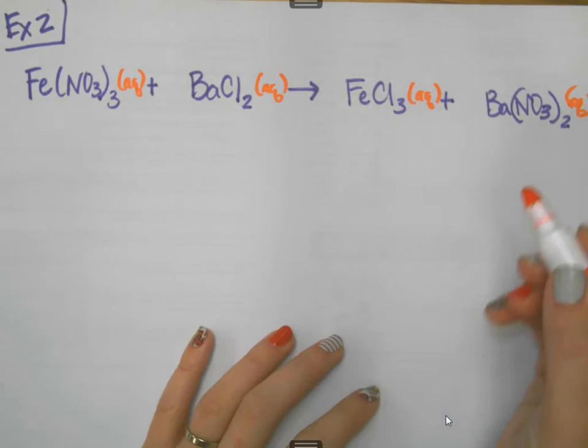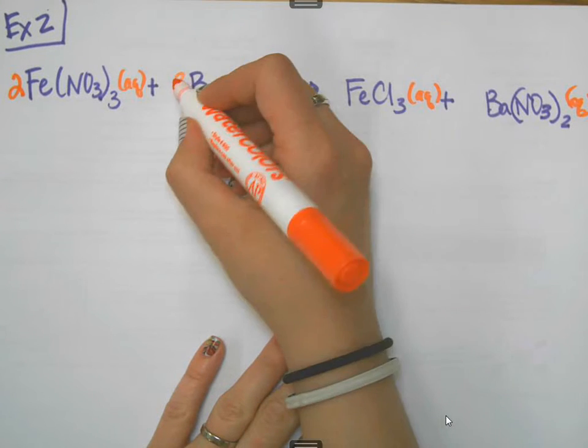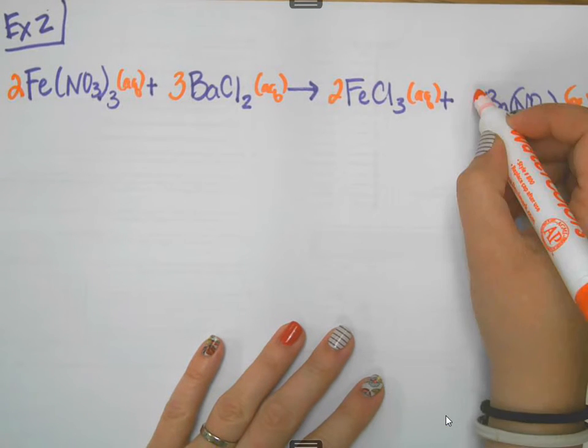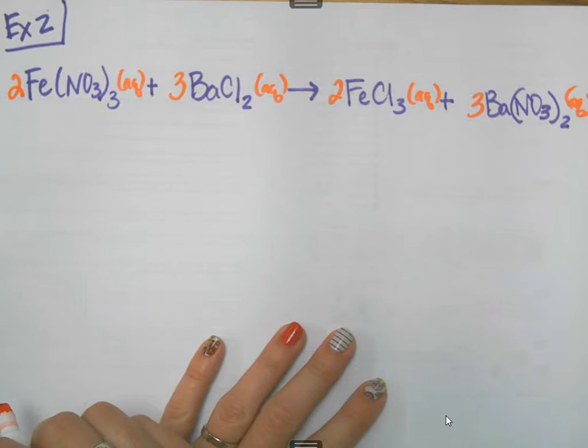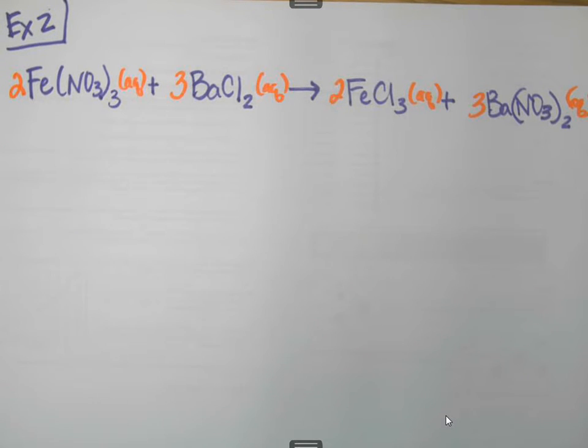And then, in order to balance it, I'm going to have a two right there, a three, a two, and a three. And, real quick check, yes, that gives me balance. So, I'm ready to move on to the next step. I do have to do both of those steps before I can start breaking things up. So, that is important. It really doesn't matter which of the first two that you do first.